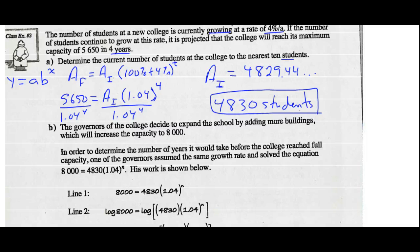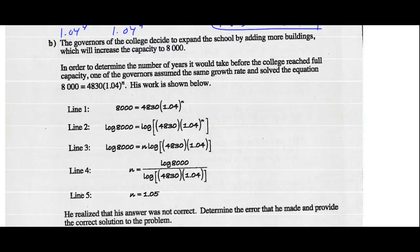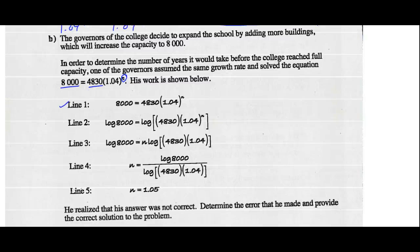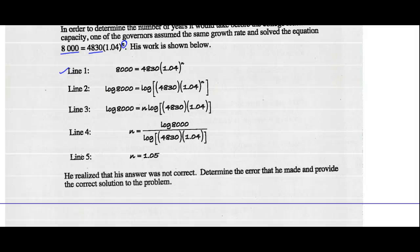Part B: The governors of the college decide to expand the school by adding more buildings, which will increase the capacity to 8,000 students. In order to determine the number of years it would take the college to reach full capacity, one of the governors assumed the same growth rate and solved the equation. Initial amount was 4,830, final amount is 8,000. Now we're looking for the number of years before this school reaches its capacity. It asks us to determine the error because the answer is incorrect.